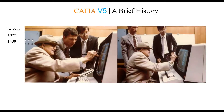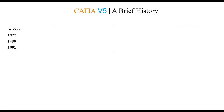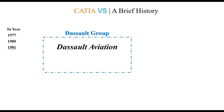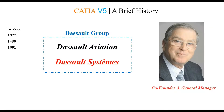Impressed by the success of CATIA, founder himself Mr. Marcel Dassault had his hands on the software and looked into it. You can see a picture of Marcel Dassault operating CATIA. It was in 1981 that the Dassault group decided to develop and sell the software, creating a subsidiary called Dassault Systems, with Francis Bernard as co-founder and first general manager.